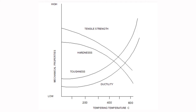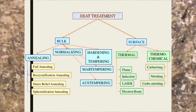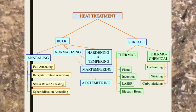The effect of tempering temperature on mechanical properties — tensile strength, hardness, toughness and ductility — are shown in this diagram. These are the main heat treatment processes, and the remaining surface hardening and case hardening will be discussed in the remaining video.